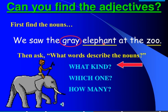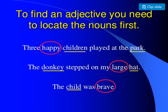We saw the grey elephant at the zoo. What words describe the nouns? What kind? Which one? How many? Here, the word 'grey' describes the word 'elephant' — it shows what kind of elephant it is, a grey colour elephant. To find an adjective, we should locate the nouns first. What are the nouns in the sentence? Children and park. The words 'three' and 'happy' describe the noun children.